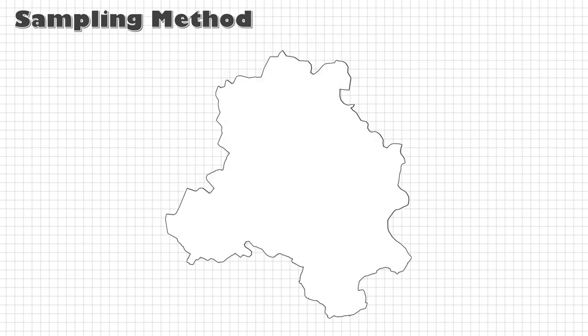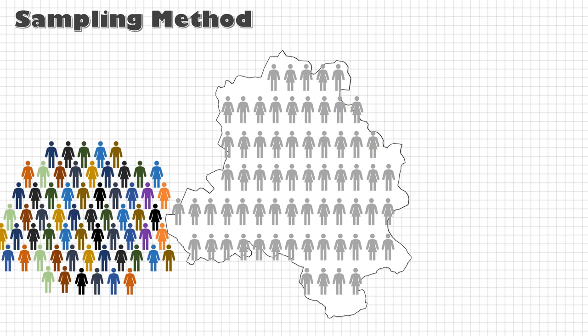Let me explain. Consider there are X number of people in a city—we call it the population, the entire group.